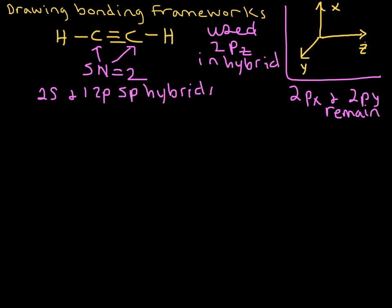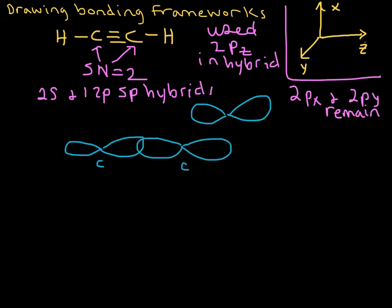Let's go ahead and draw the sigma bonding framework first. Think about what shape those hybrid orbitals are. They're linear. So the set of 2sp hybrids looks like that. Let's go ahead and draw the framework, the sigma bonding framework. Then hydrogen, unhybridized.